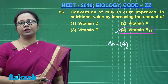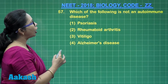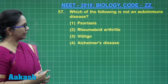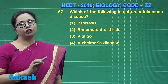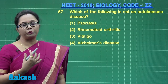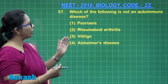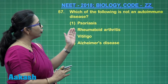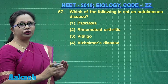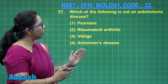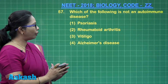Question 57: Which of the following is not an autoimmune disease? An autoimmune disease is one where our own immunity is directed against a tissue, organ, or particular cells in the body. Psoriasis involves itchy patches on the skin; rheumatoid arthritis involves rheumatoid factor acting on the synovial membrane leading to inflamed joints; vitiligo involves whitish patches on the skin.